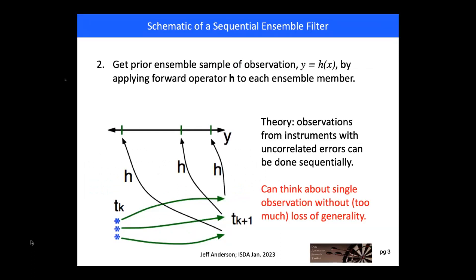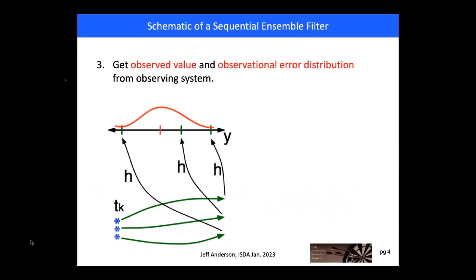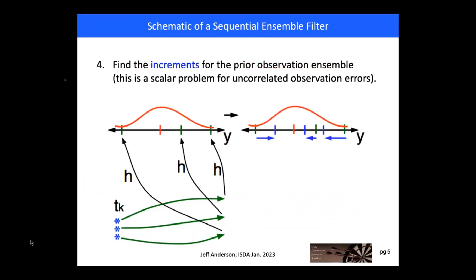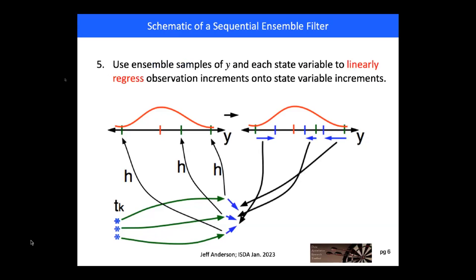In this case we get three estimates of an observed value Y. We then proceed to solve the scalar problem: we have a likelihood which comes from the instrument shown in red, and we use Bayes to combine the likelihood with the prior ensemble. We get a posterior ensemble shown in blue vertical bars and increments in observation space shown as vectors. We then do a bivariate linear regression using the prior ensemble statistics of Y and a given state variable X to get the increments for X, doing that independently for all state variables in the model state.